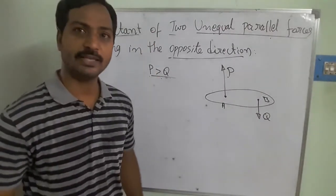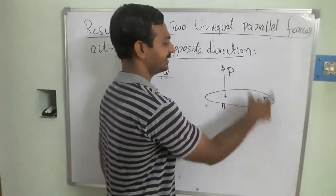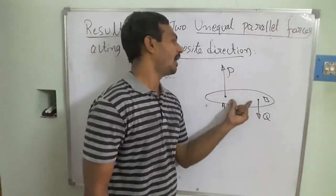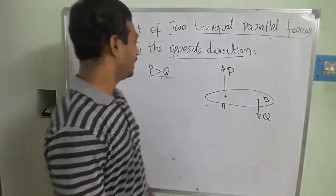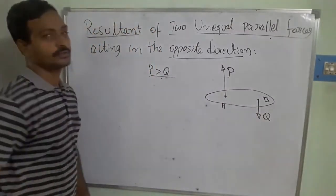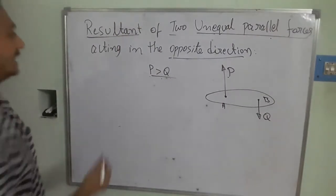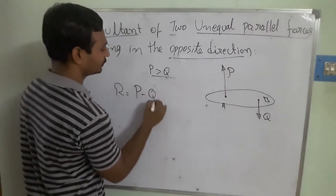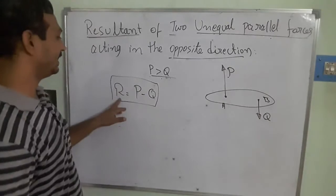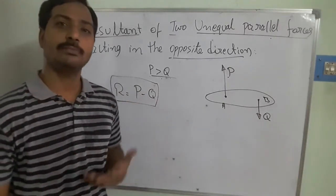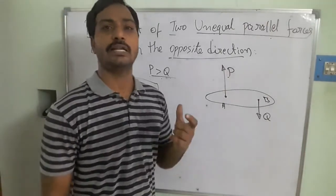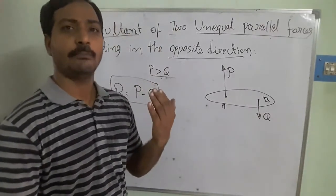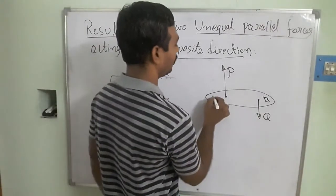Since the forces are moving in opposite directions, the resultant component will exist away from these two points — not between them. The resultant R equals P minus Q, since P is the greater force. The position of the resultant is not in the middle of AB but is shifted towards the force of maximum magnitude.